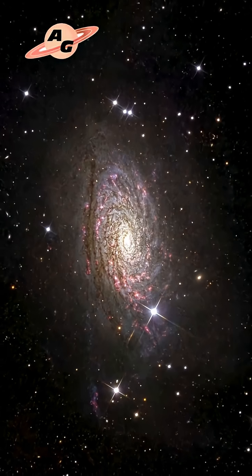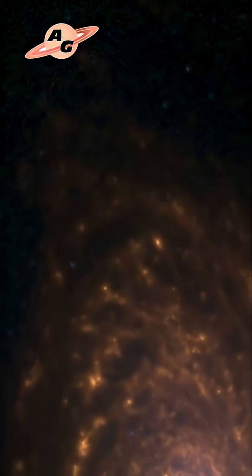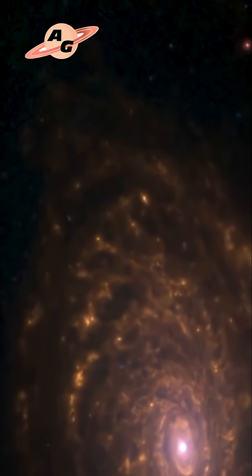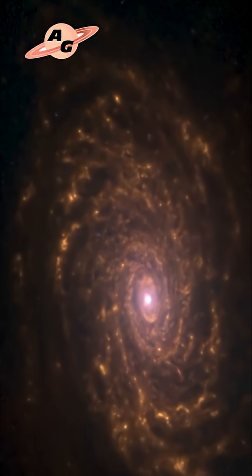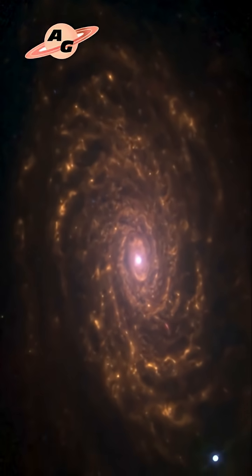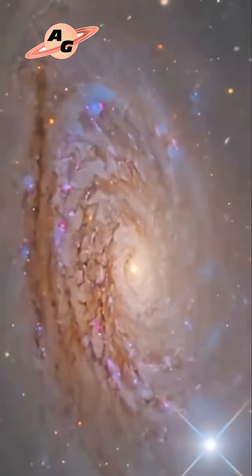Astronomers estimate the Sunflower Galaxy's diameter at approximately 100,000 light-years, making it comparable to our Milky Way. Its mass, according to various estimates, ranges from 900 billion to 1.5 trillion solar masses.